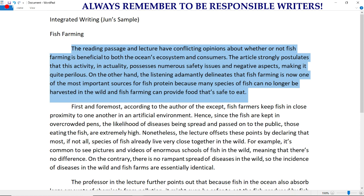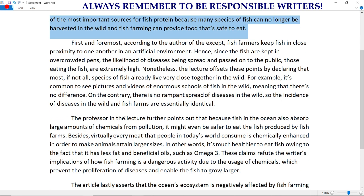Okay, so let's read this essay. Introduction: The reading passage and lecture have conflicting opinions about whether or not fish farming is beneficial to both the ocean's ecosystem and consumers. The article strongly postulates that this activity in actuality possesses numerous safety issues and negative aspects, making it quite perilous. On the other hand, the listening adamantly delineates that fish farming is now one of the most important sources for fish protein, because many species of fish can no longer be harvested in the wild, and fish farming can provide food that is safe to eat. Great news! Now let's move on to the first body.